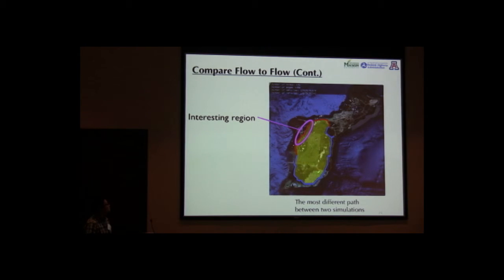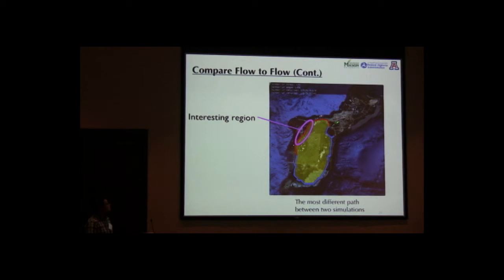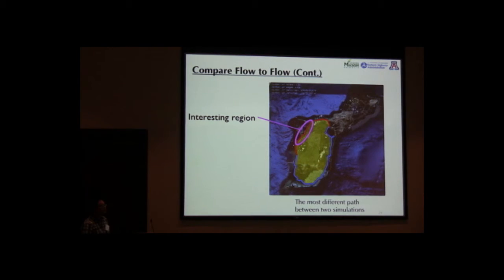Here is the visualization using the most different paths between two simulations. For the same start and end node, in simulation 2 the vehicles not only enclose a very large area, but also have almost twice the traveling distance compared to simulation 1. So maybe something changed in that region, and the expert can look into it.